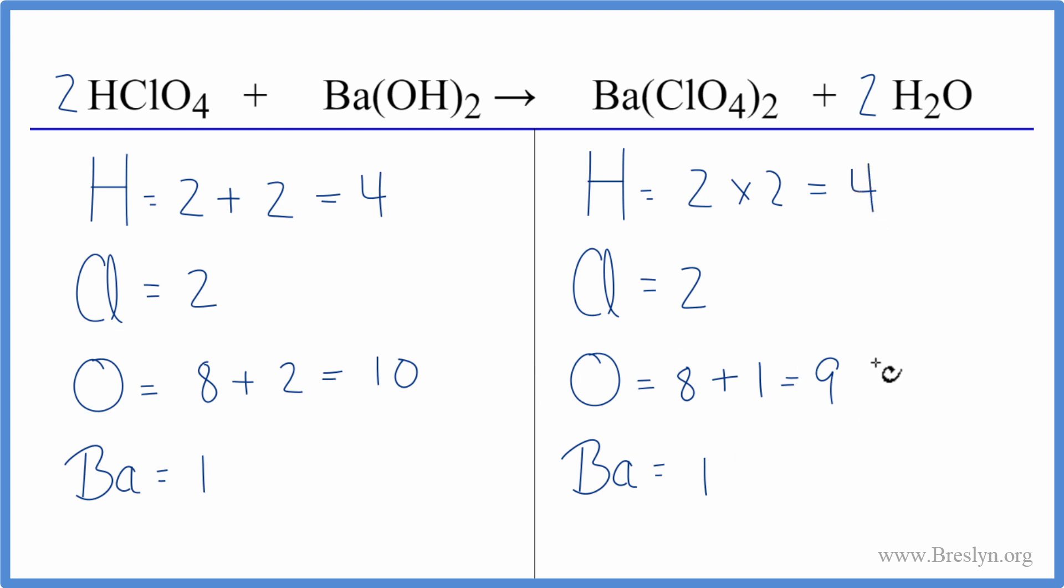And this might also fix the oxygens. Let's update those. So we have our two times the four, that's eight. Plus now we have one times the two, that's two. That gives us ten and we're done. This equation's balanced.